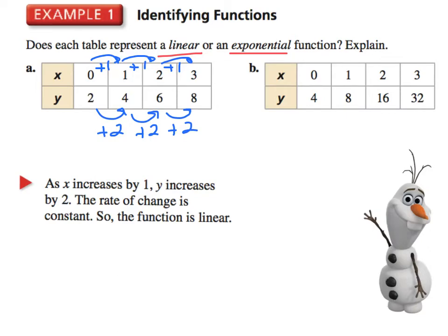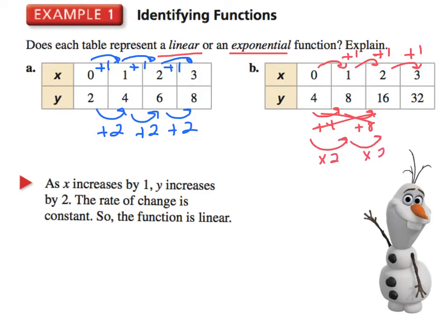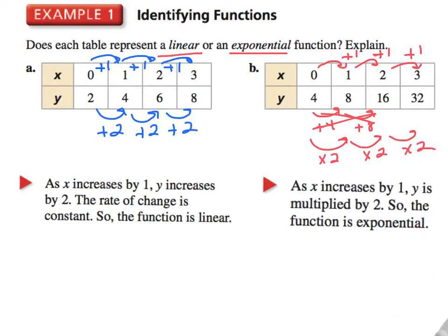In the second example, your x value also increases by 1 each time. The y values increase by 4, then by 8, then by 16. Looking for the pattern — this is actually times 2, times 2, times 2. Therefore, that's going to be exponential. As x increases by 1, y is multiplied by 2, so the function is exponential.